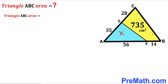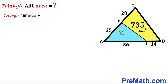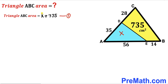The area of the whole triangle ABC is going to be equal to the sum of these two individual areas. So we can write: area of triangle ABC = x + 735. I'm going to label this as equation number one.